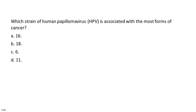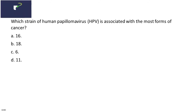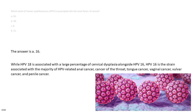Which strain of human papilloma virus (HPV) is associated with the most forms of cancer? A. 16. B. 18. C. 6. D. 11. The answer is A. 16. While HPV-18 is associated with a large percentage of cervical dysplasia alongside HPV-16, HPV-16 is the strain associated with the majority of HPV-related anal cancer, cancer of the throat, tongue cancer, vaginal cancer, vulvar cancer, and penile cancer.